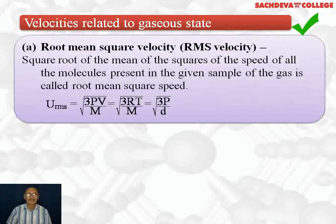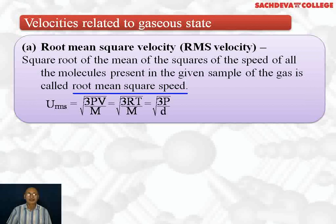Velocities related to the gaseous state: the first is root mean square velocity or RMS velocity, which is the square root of the mean of the squares of the velocities of all the molecules present in the given sample of the gas. U_rms = √(3PV/M). Since PV = RT, it becomes √(3RT/M). Since mass per unit volume is density, we can also write it as √(3P/d).